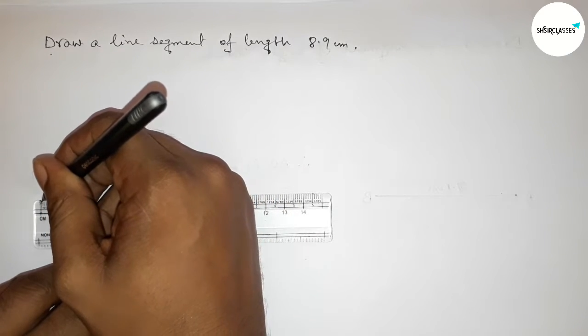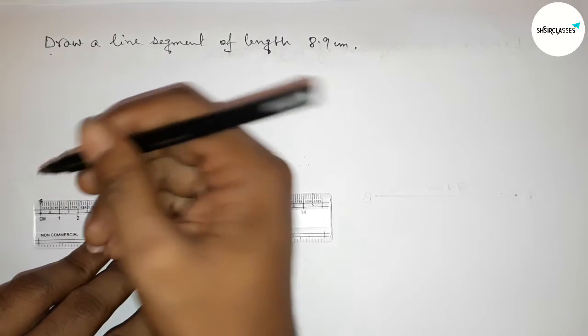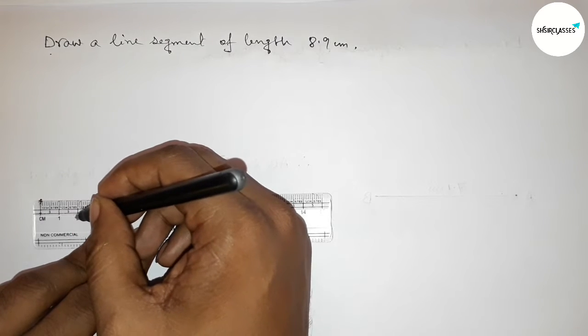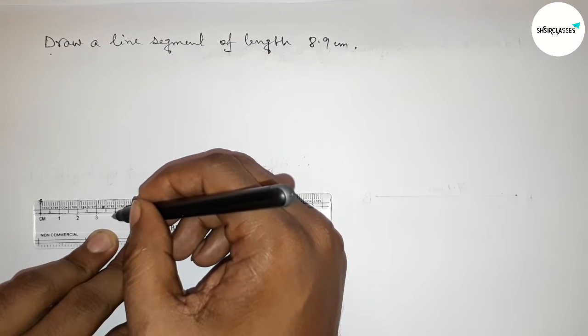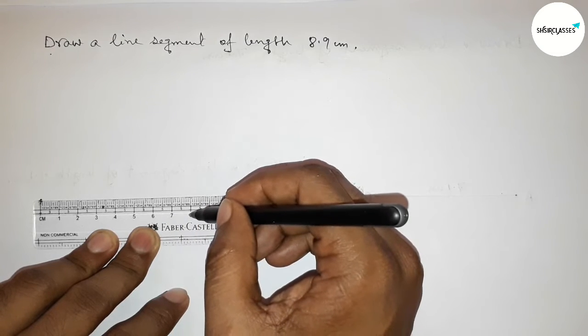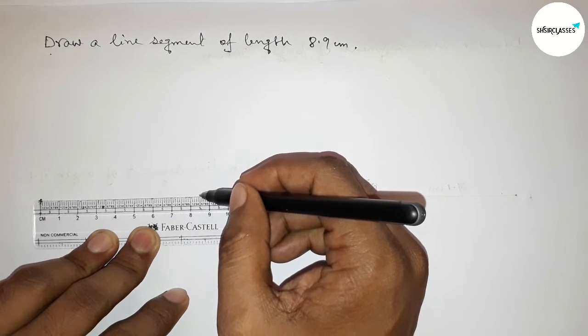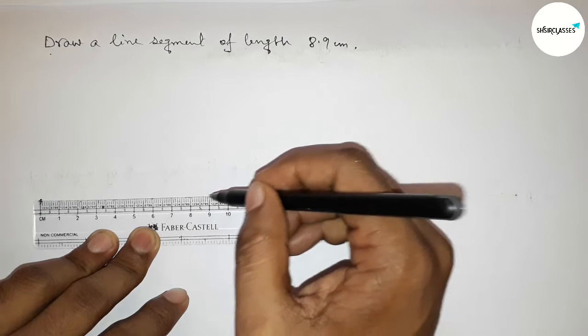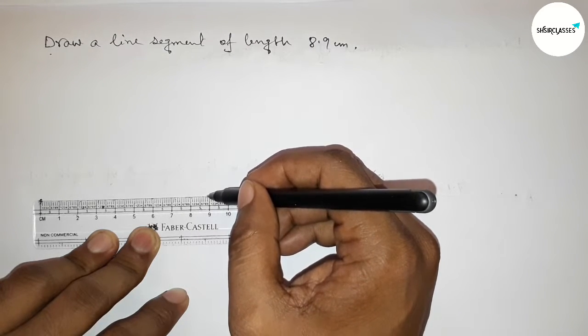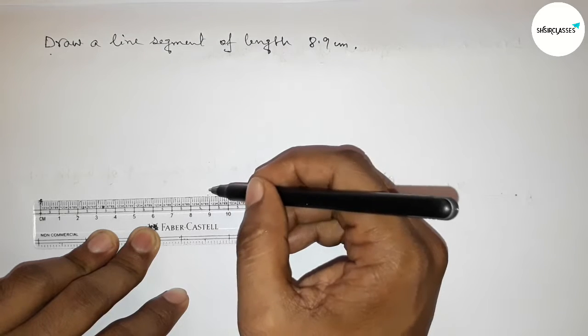First, counting here from the starting zero. This is zero, one, two, three, four, five, six, seven, eight. This is eight point five, so eight point six, seven, eight, nine. This is eight point nine centimeters.